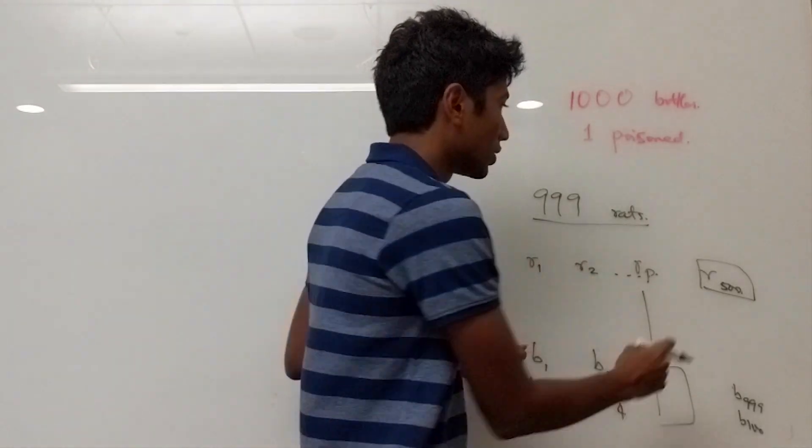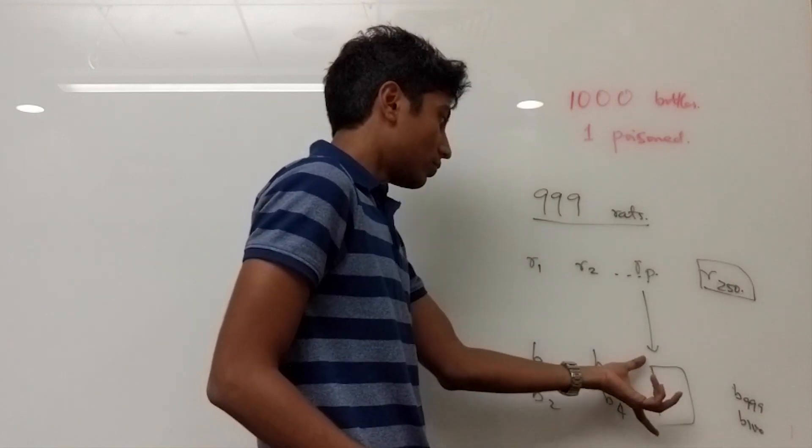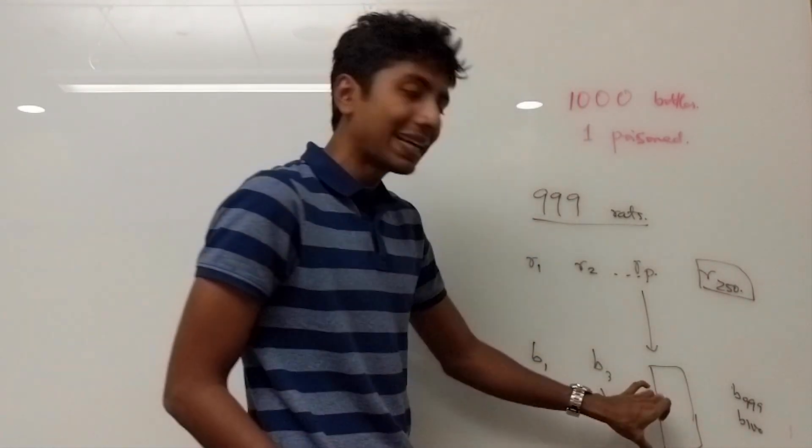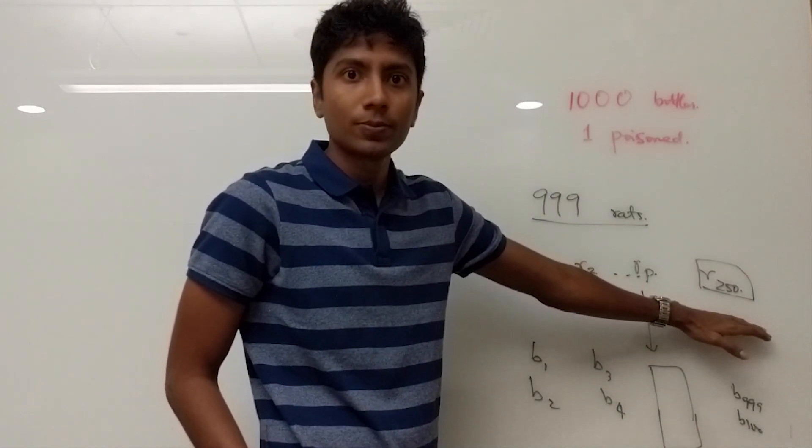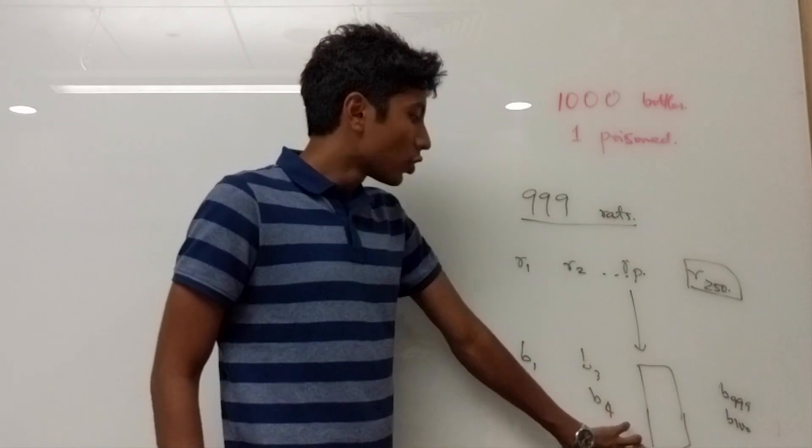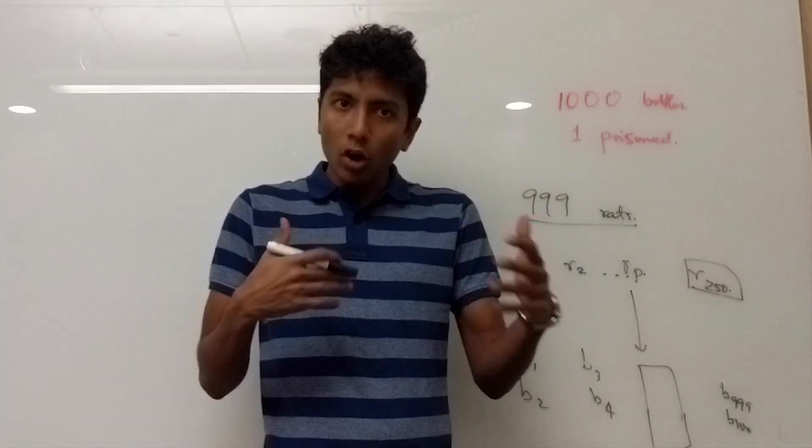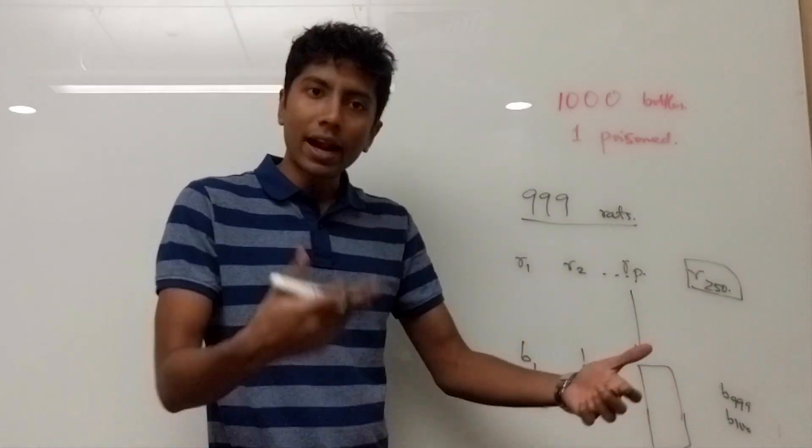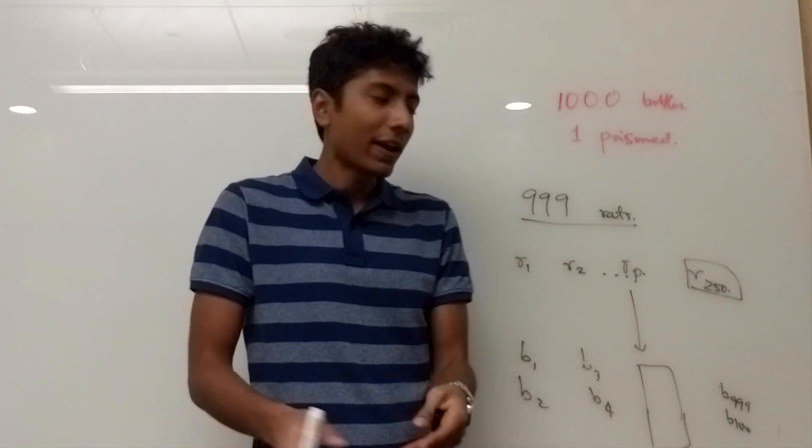If I reduce this number further to 250, the range of bottles which might be poisoned increases but we have literally halved the number of rats we need for this. But this is not what we want. We need a concrete answer and if there was some sort of concurrency allowed, if we would run rats in parallel, catch one rat, feed them and then catch a rat while the poison is taking effect, this would have worked.